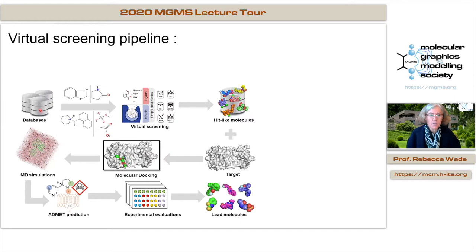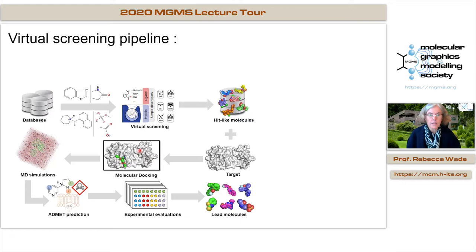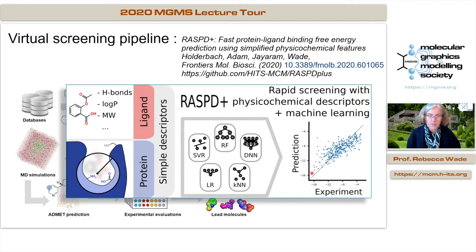One needs a way to pre-filter compounds before going to docking, and this is where we use the RASP D+ procedure. In RASP D+, we compute various properties of the ligand and of the receptor binding site, then look at the complementarity between these two sets of properties without actually docking the ligand into the protein. We look for correlations with about seven different machine learning methods and combine those results to predict binding affinities. It's a cheap, quick, and approximate method useful for pre-filtering in the screening pipeline, used routinely against coronavirus protein targets and others.